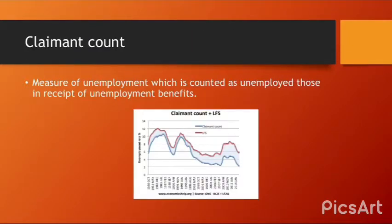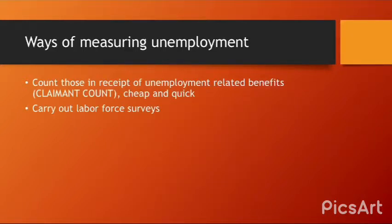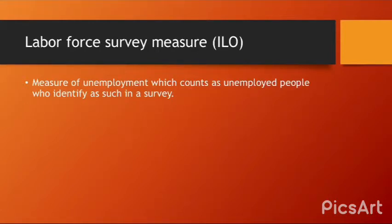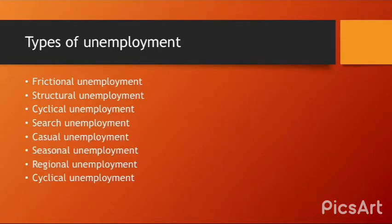There are two ways of measuring unemployment. First, the claimant count — this counts as unemployed those in receipt of unemployment-related benefits; it is a cheap and quick method. Second, the labor force survey — this counts as unemployed people who identify themselves as such in a survey.